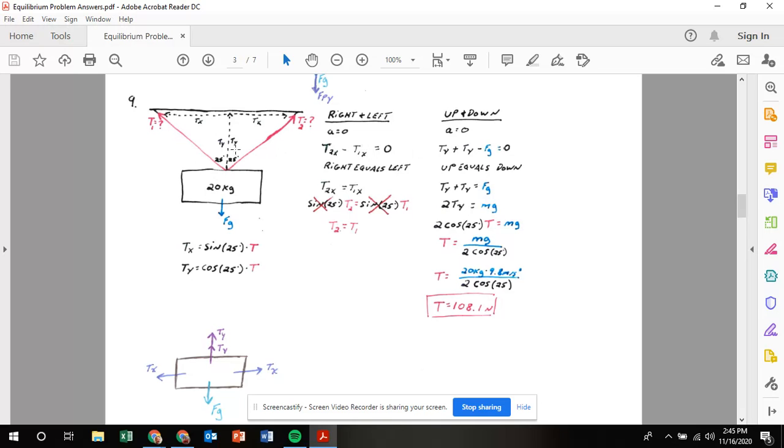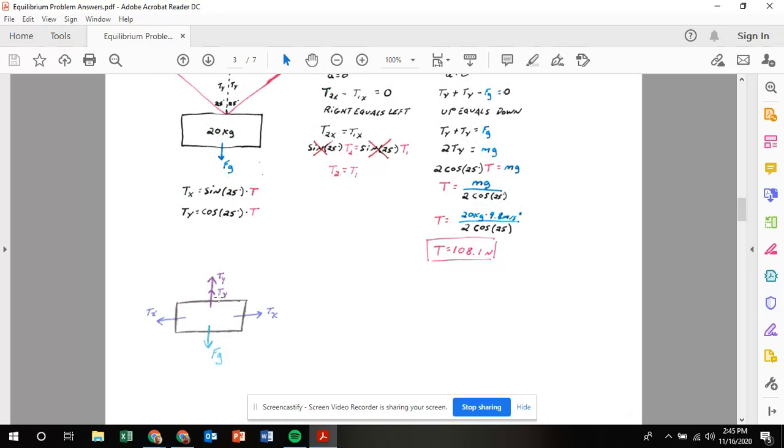Now let's go to the up and down. I have tension up for this tension here and tension up from this tension here, and they're both going to be upward. Tension up plus tension up equals force of gravity down. Tension up plus tension up is two tensions going upward, so 2ty equals force of gravity, which is mg. If I plug in what ty is, ty is cosine of 25 times t. So I have two of those, two cosine 25t's equals mg. If I divide my two cosine 25s, I end up with mg over two cosine 25. Mass is 20, g is 9.8 over two cosine 25, and that gets me a tension of 108.1 newtons.